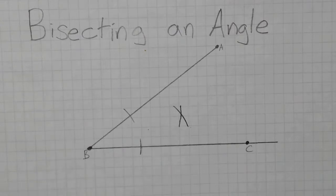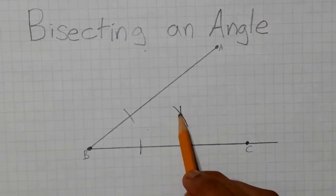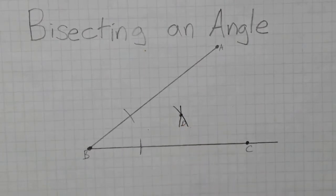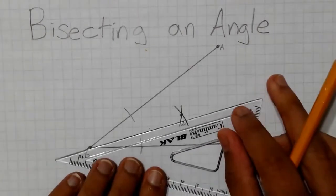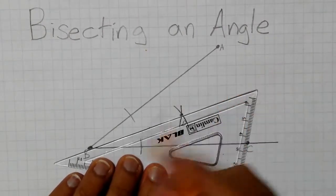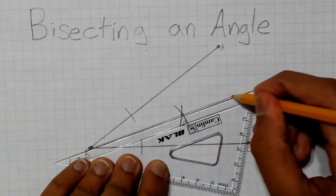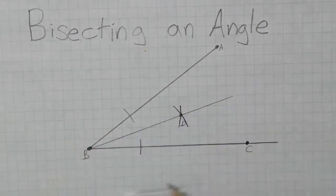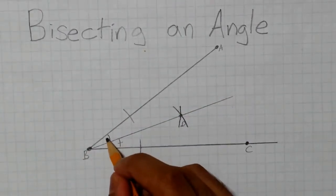The point of intersection between these two arcs can be labeled point D. Then by connecting points B and D, we can bisect angle ABC.